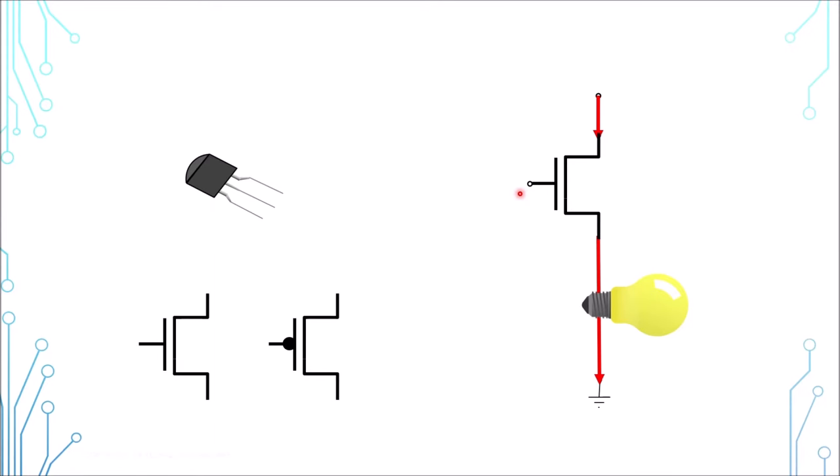There are two types of transistors, or to be accurate, there are two polarities. One that is turned on by sending a logical 1 voltage, and the other one which is turned on by sending a logical 0 voltage.